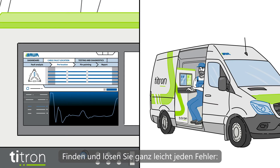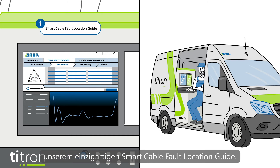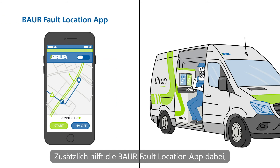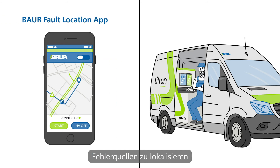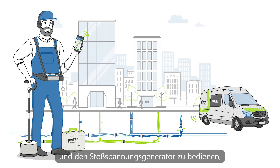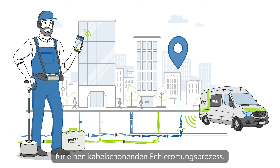You'll easily find and solve the problem with a trustful support by your side — our unique smart cable fault location guide. Furthermore, the Bauer Fault Location App assists in pinpointing and remotely operates the surge voltage generator to minimize the intensity on the cable section for a gentle cable fault location process.